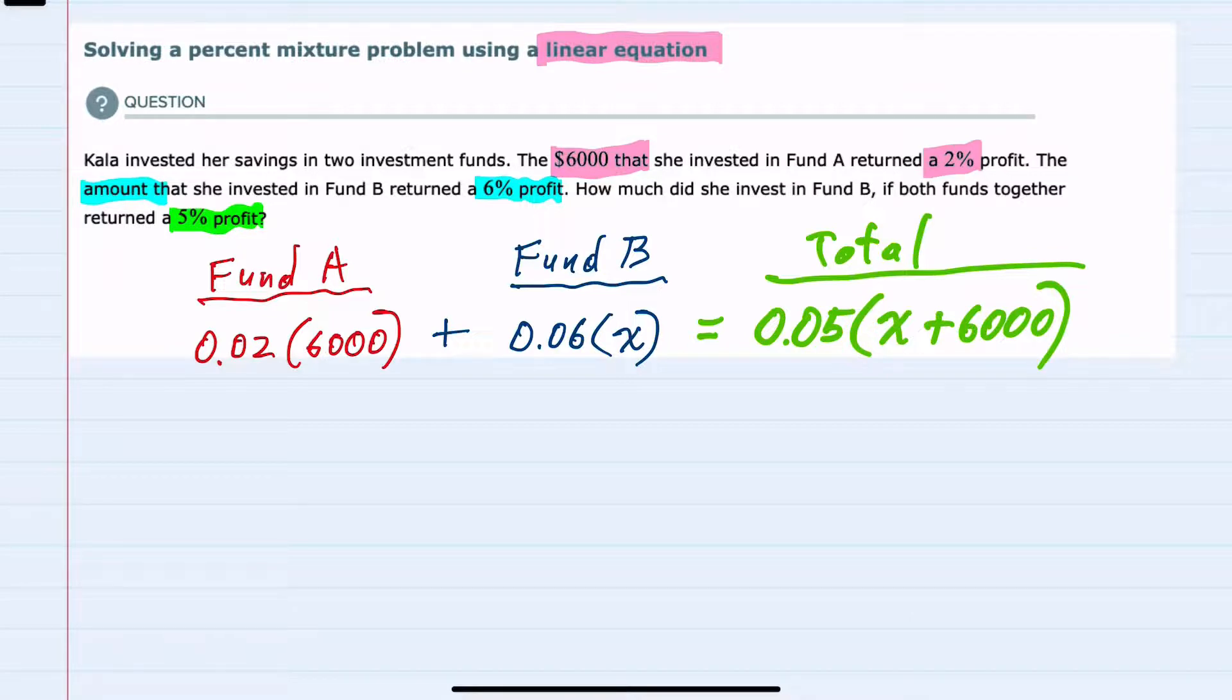we can go through and do some simplification. Just moving from left to right, we can do the multiplication here. For Fund A, 0.02 times 6,000, that would be 120.